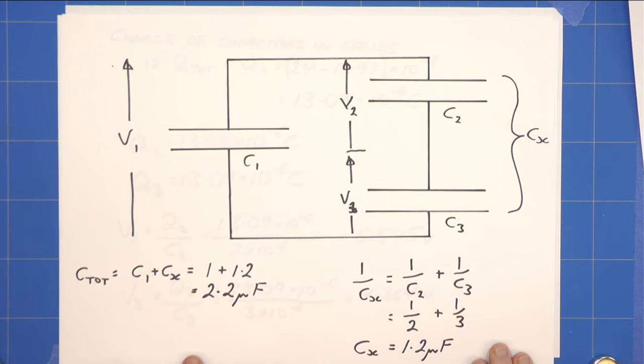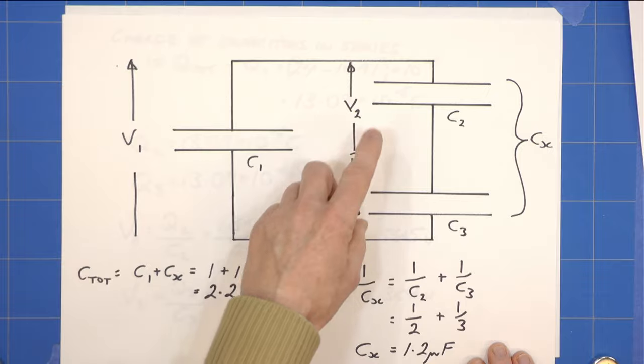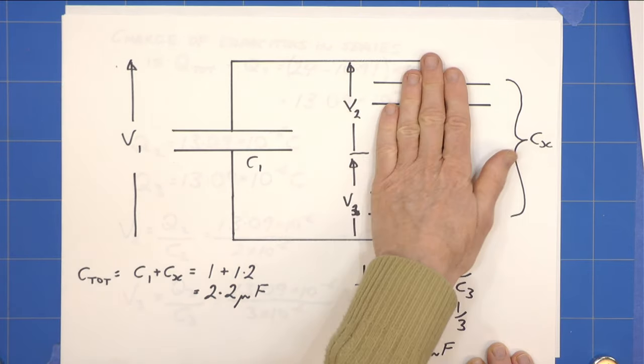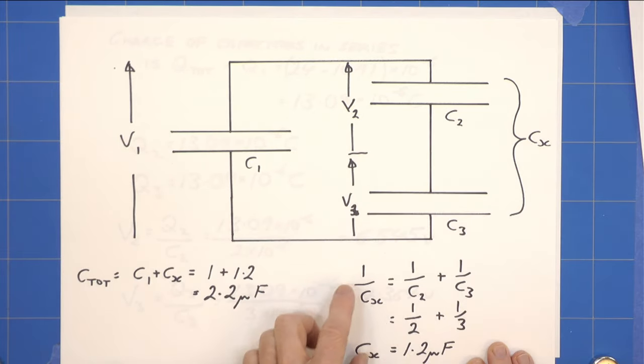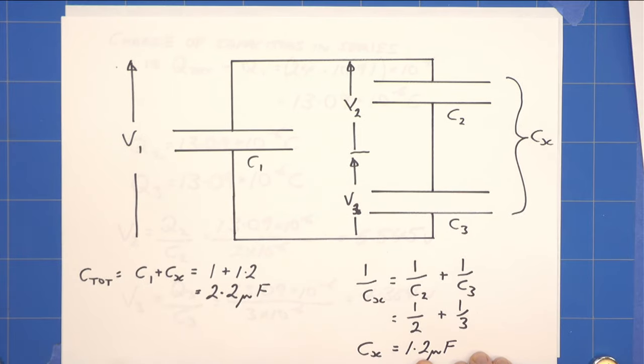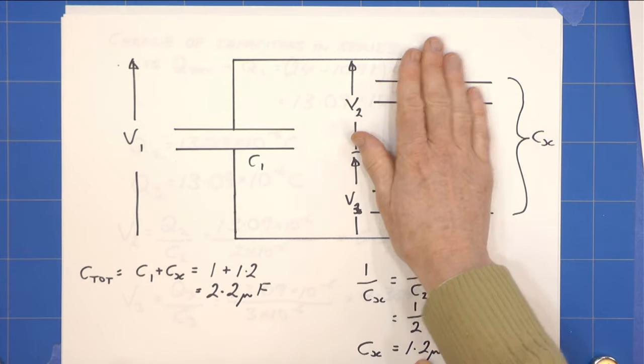So using the well-known formulae we can calculate the equivalent capacitance of this arm, 1 over Cx. 1 over Cx equals 1 over C2 plus 1 over C3, equals a half plus a third, which gives us, inverting back again, Cx equals 1.2 microfarads for that arm there.